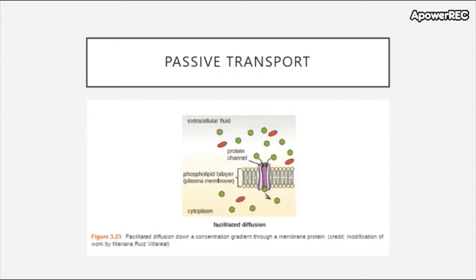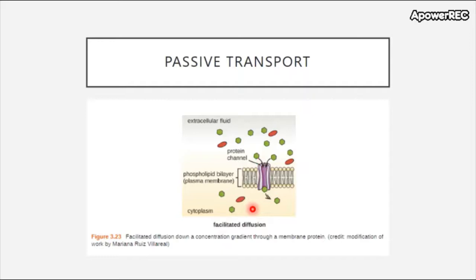Next up is passive transport — not simple diffusion. The way this works is the cell can have protein channels, which are transmembrane proteins big enough that larger molecules can fit through them. Sometimes they're a particular size that only allows certain types of molecules to pass through. This mechanism occurs the same way simple diffusion does — it goes across a concentration gradient. So you can see these molecules going inside of the cell because there's less of them inside than outside.